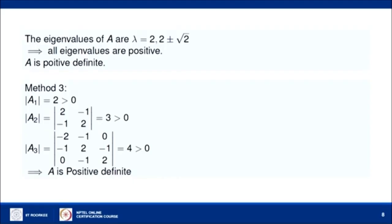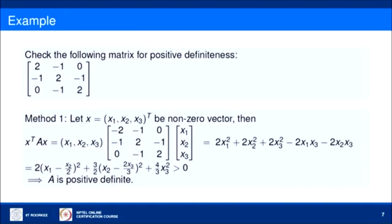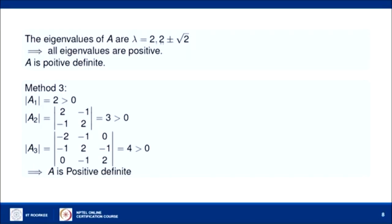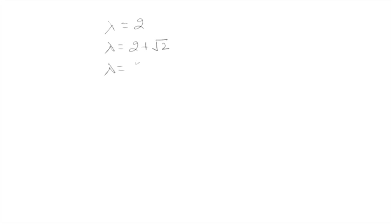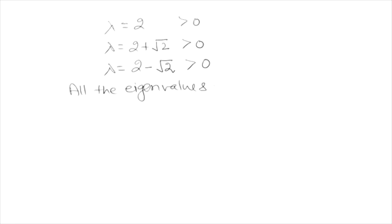Another way to check is by calculating the eigenvalues of matrix A. If we compute the eigenvalues of this matrix A, they come out to be lambda equals 2, lambda equals 2 plus root 2, and lambda equals 2 minus root 2. Checking each: 2 is positive, 2 plus root 2 is positive, and 2 minus root 2 is also positive. So all the eigenvalues of A are positive, which implies that A is positive definite.